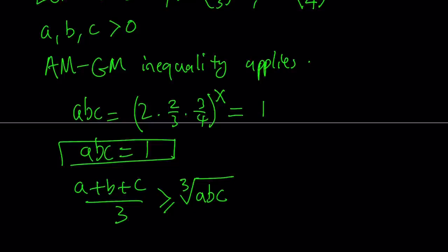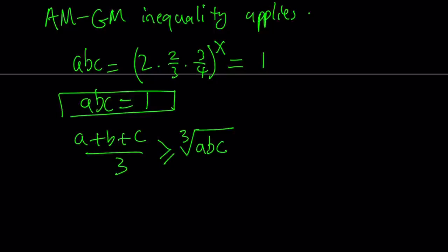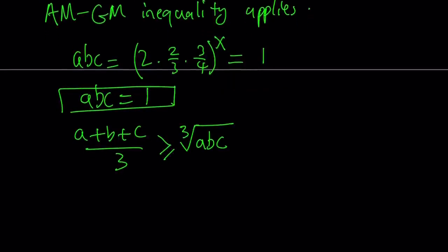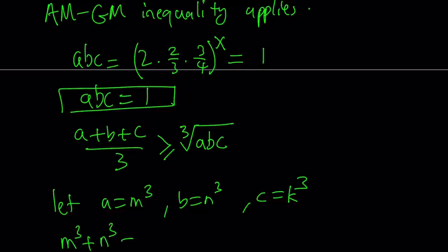Now we're going to talk about why this applies and then we're going to use it. So how does this inequality work? First of all, let's take a look at this inequality from a different perspective. In order to prove this inequality, I'm going to consider the following: let a equal m to the third power, b equals n to the third power, and c equal k to the third power. We're going to consider the expression m cubed plus n cubed plus k cubed minus 3mnk.